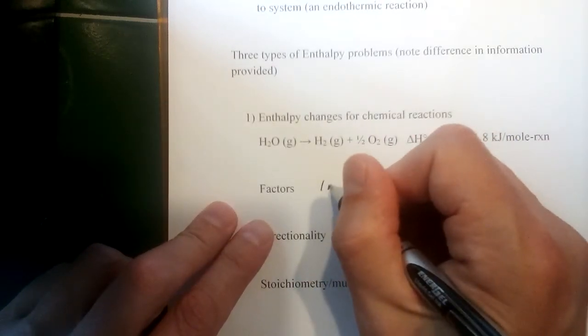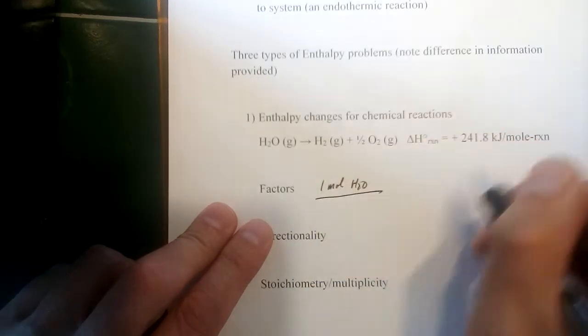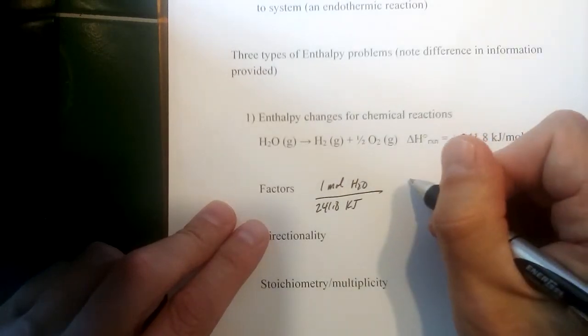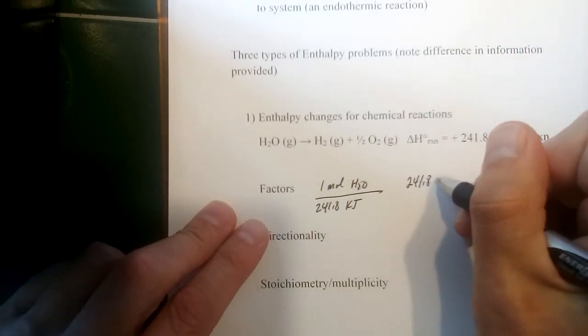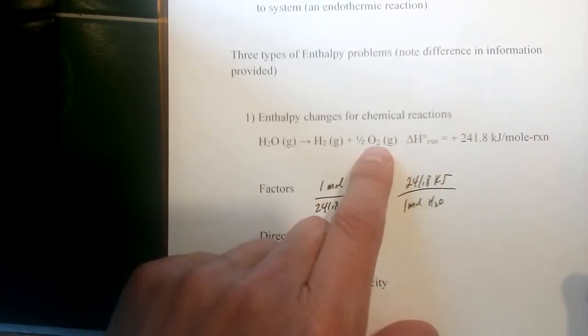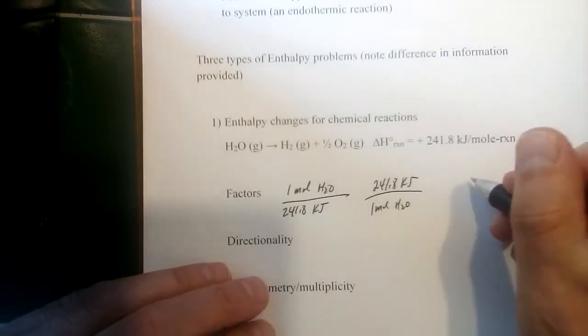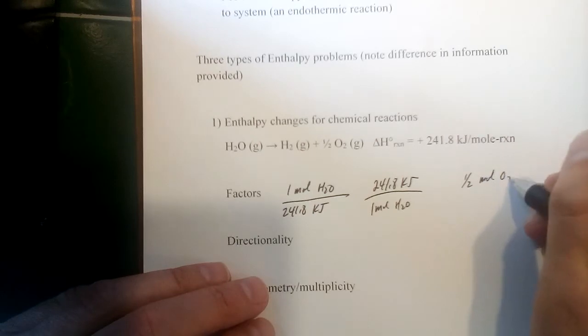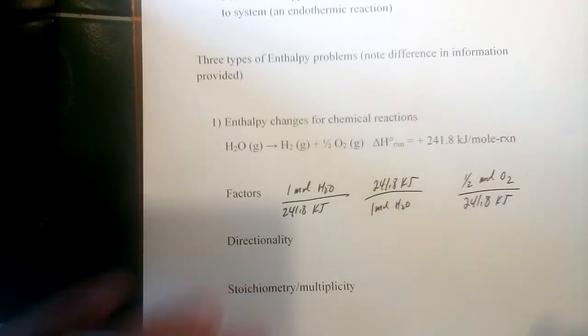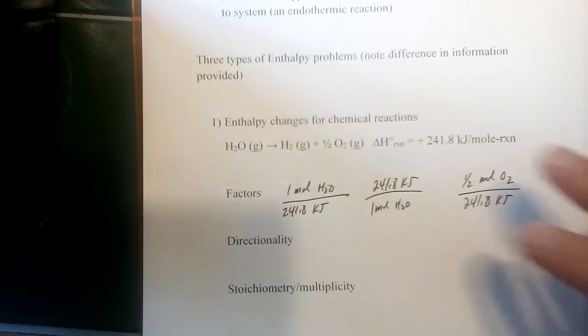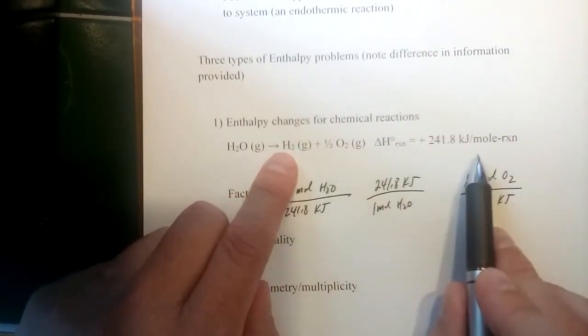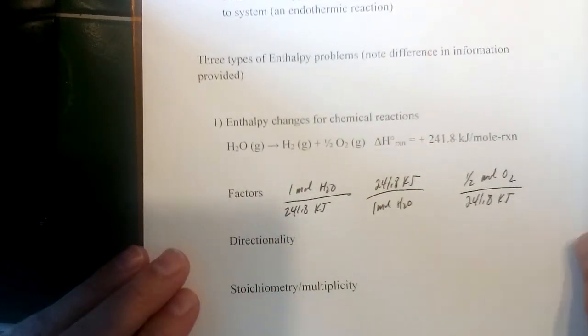So this leads to several different factors we can relate to this equation. We could relate our reactant, one mole of water, to the quantity of heat, 241.8 kilojoules. Or we could flip that over, 241.8 kilojoules would relate to one mole of water. But like I said, with the oxygen, it's only half a mole. So we would have half of a mole of O2 would relate to that same quantity of energy because enthalpy is describing the relationship to that whole reaction. That could flip over as well or invert. And hydrogen is one mole as well. We could relate the quantity of hydrogen that's produced in this reaction to that quantity of heat as well.